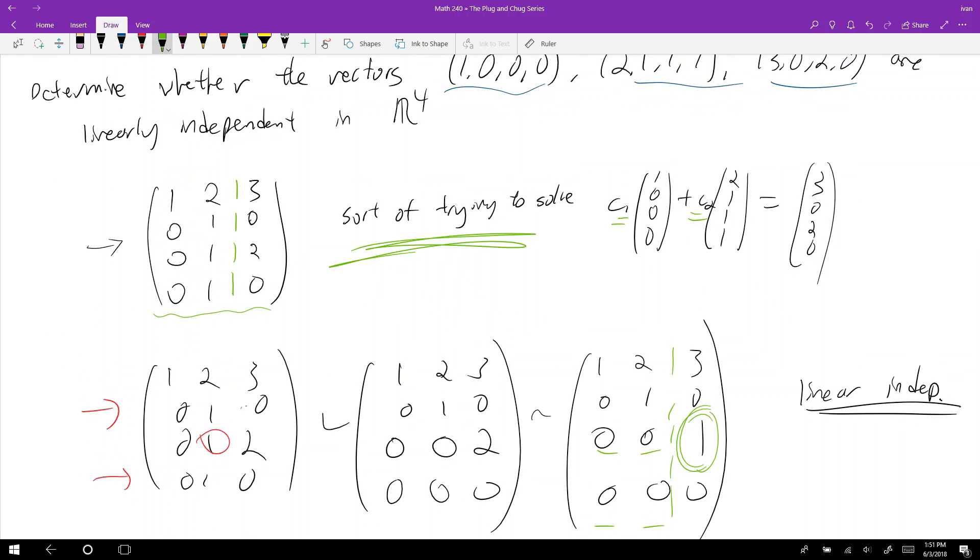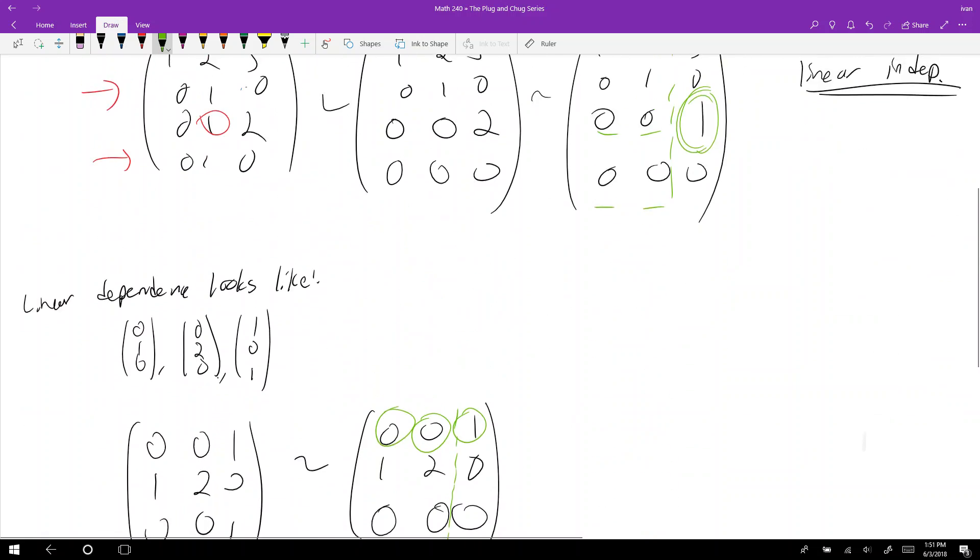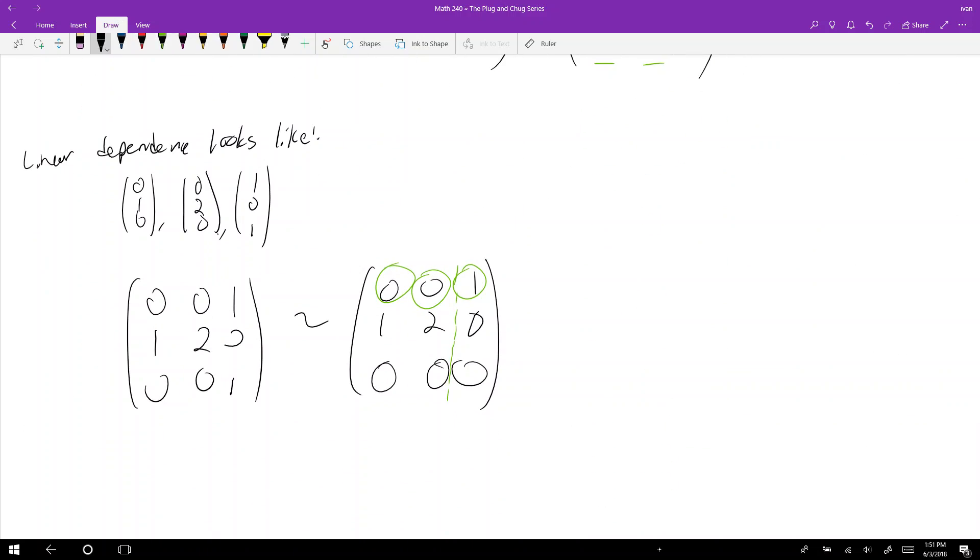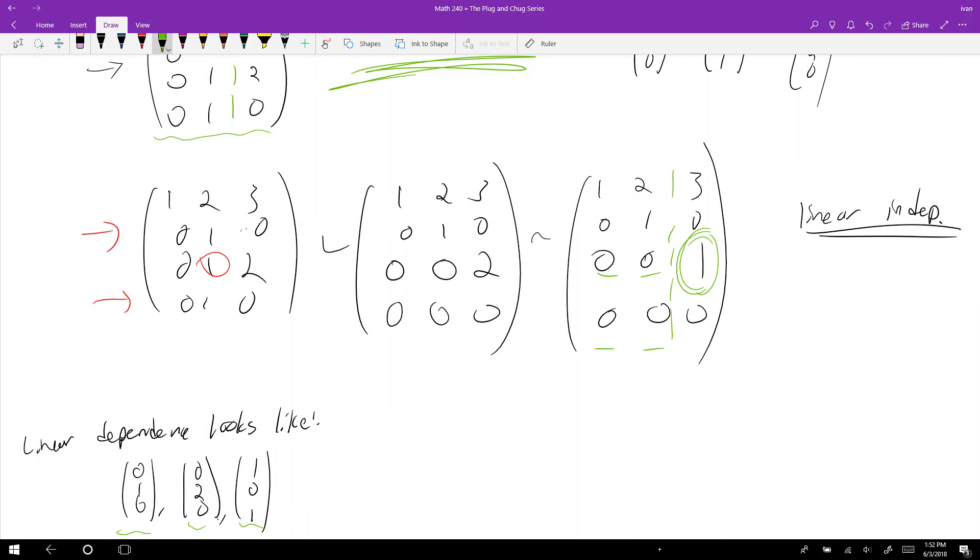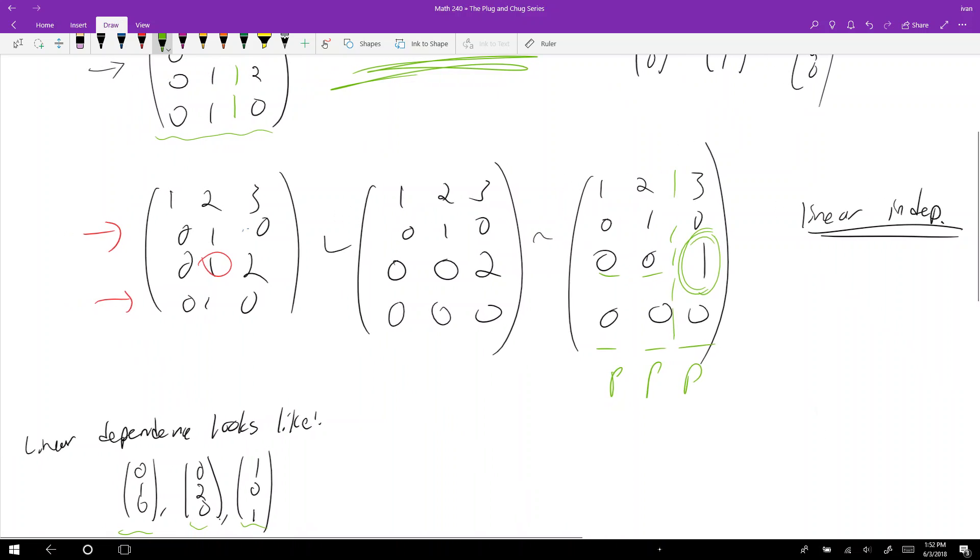What you actually want to do then is you want to see the number of pivots there are. So if we rearrange this matrix, it looks like this. And you'll notice that here's a pivot and here's a pivot, right? So there are two pivots, but there are three corresponding vectors. And so what you actually want to say then is that this system is linearly dependent because the number of pivots is less than the number of independent vectors, or the number of pivots is less than the number of vectors, right? Or in this case, it's the number of columns. And above, you'll notice that we actually have a pivot in each column, right? One for each vector.